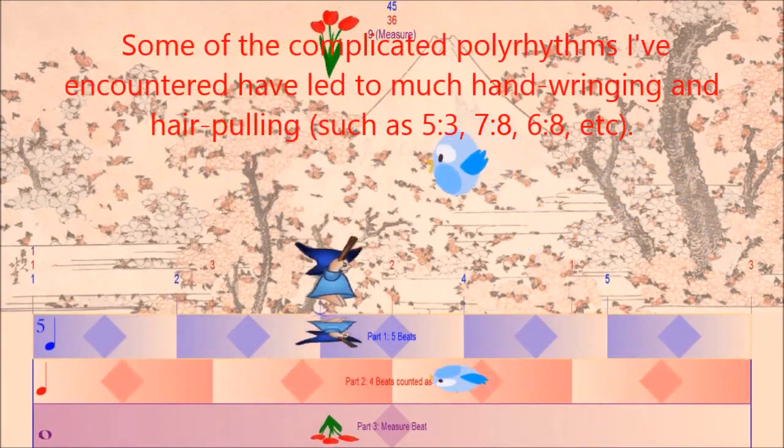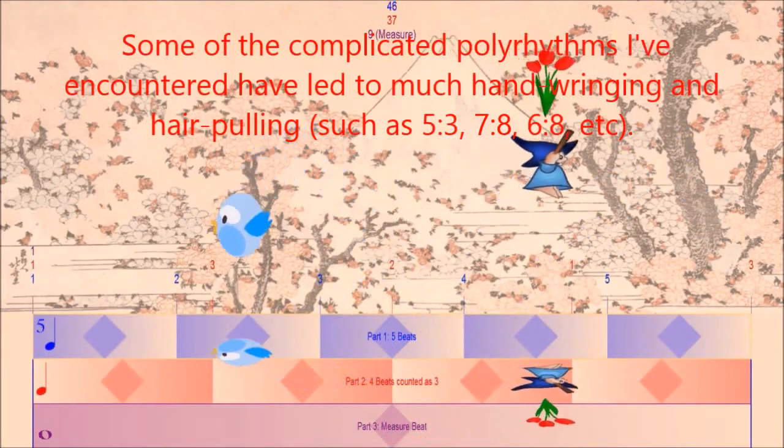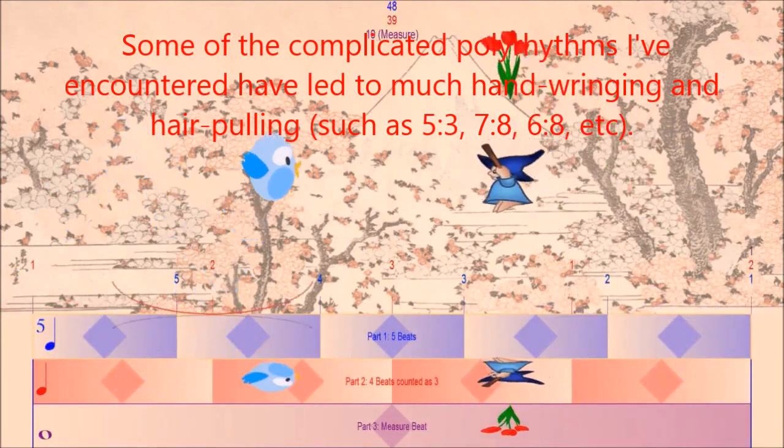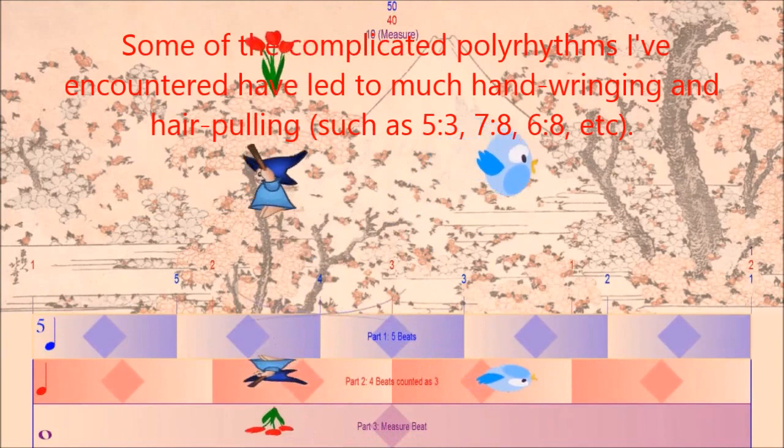Some of the complicated polyrhythms I've encountered have led to much hand-wringing and hair-pulling, such as 5 over 3, 7 over 8, 6 over 8, etc.